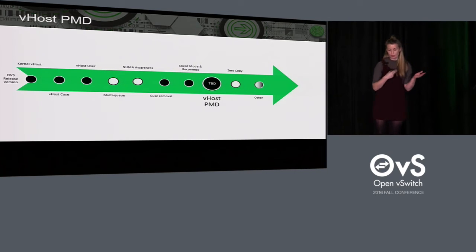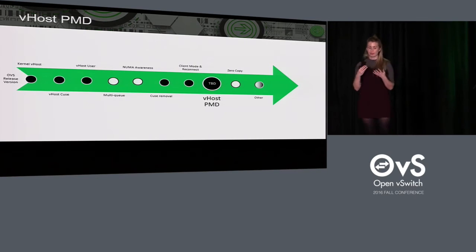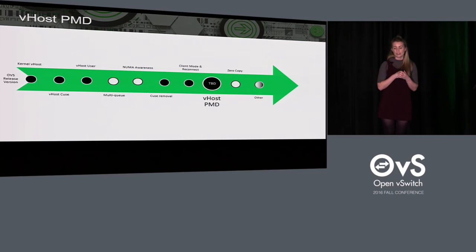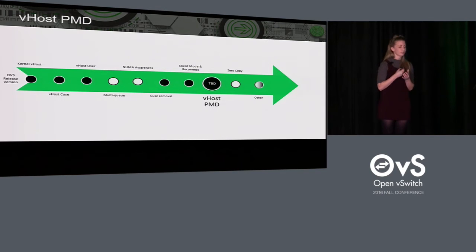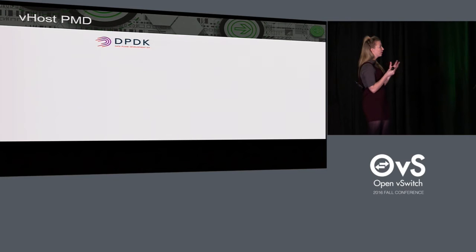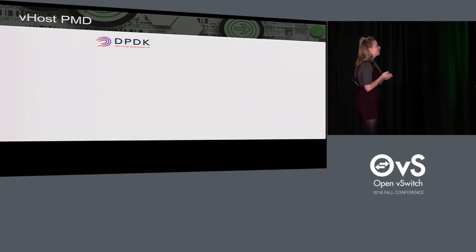From this point onwards, we're talking about potential future vhost improvements in Open vSwitch — things that may be available in DPDK already but not yet in OVS. The first is the vhost PMD, which was introduced in DPDK 16.4. There's a patch on the OVS mailing list at the moment to enable it, currently under review. To understand what the vhost PMD is, you need to know a little more about how DPDK is structured.